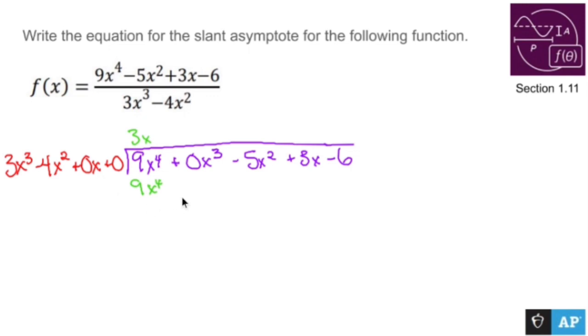3x times negative 4x squared is going to be negative 12x cubed, plus 0x because 3 times 0—plus 0x, that should be squared. My bad. Now you subtract this entire row, which means you flip the signs of everything in here.